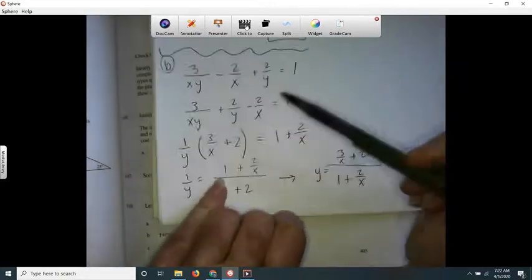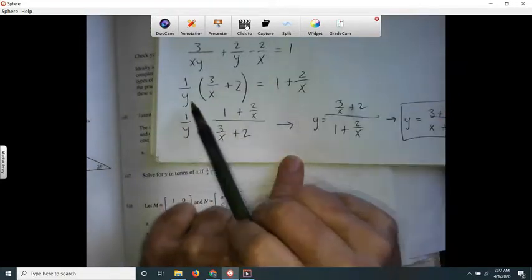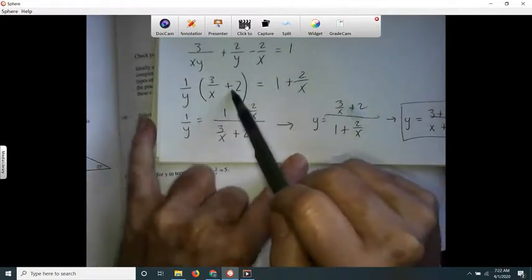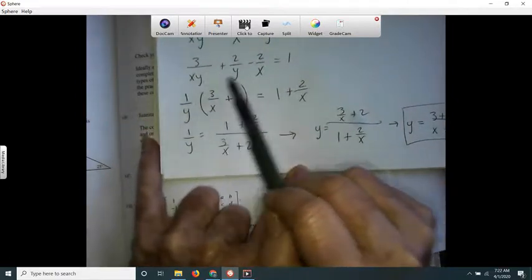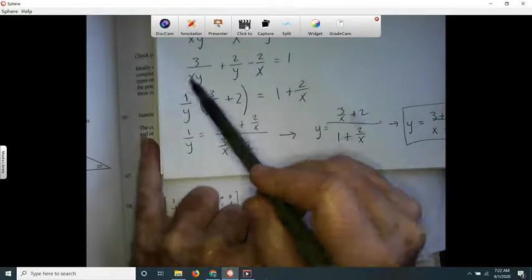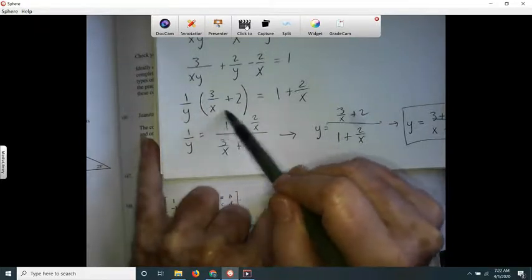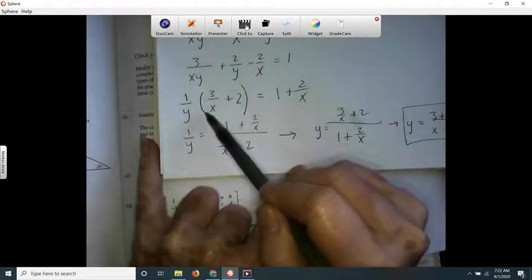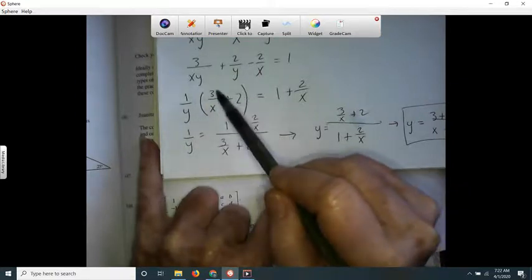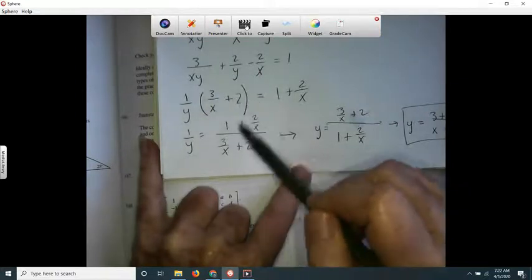Now all the y's are right here and I can just divide both sides by what's in the parentheses. So I divided both sides by 3 over x plus 2.